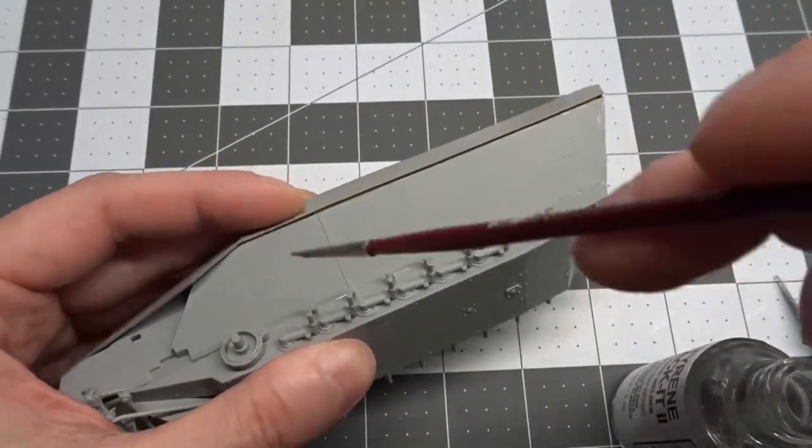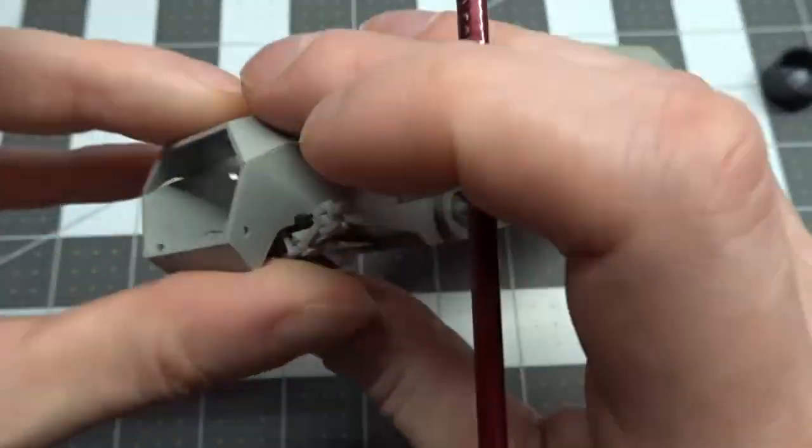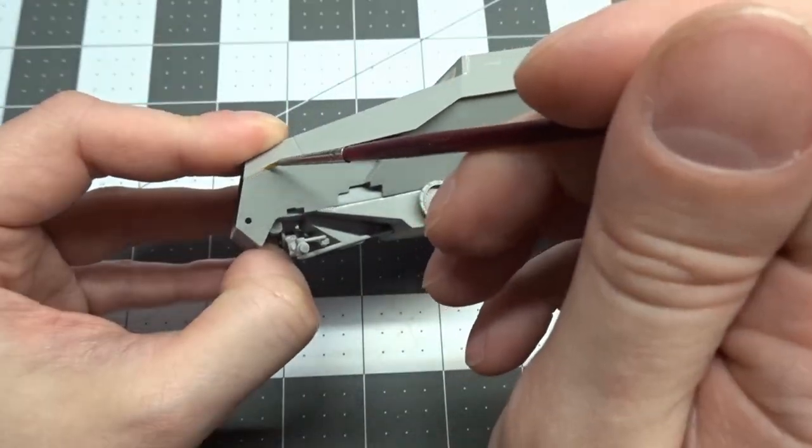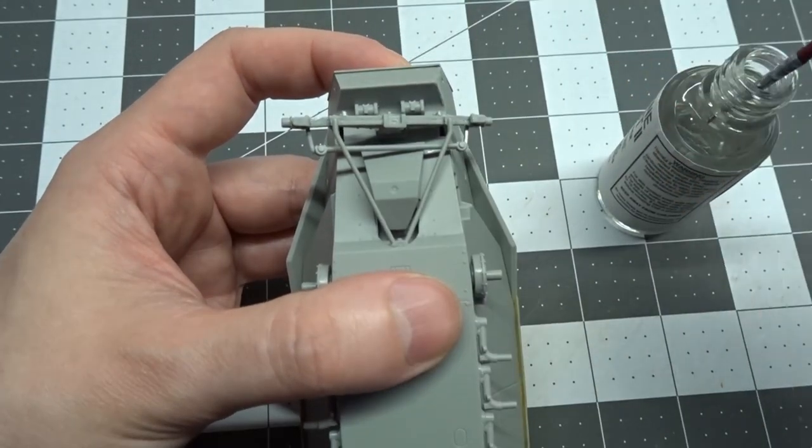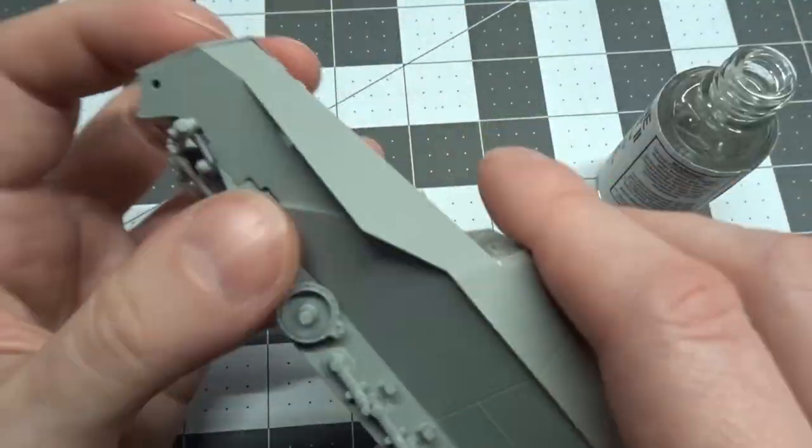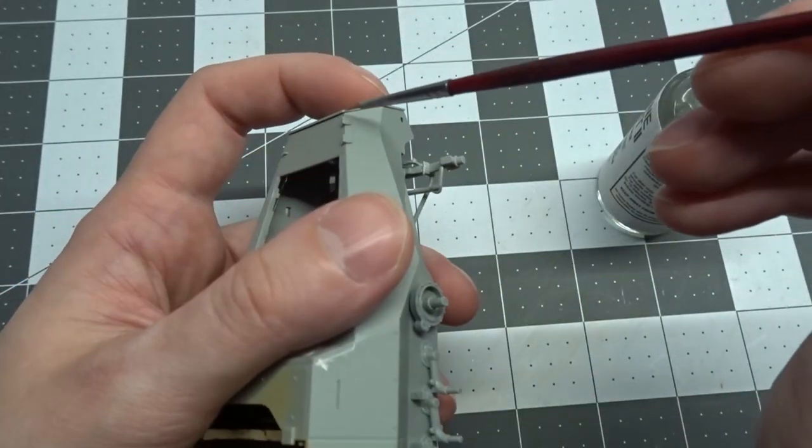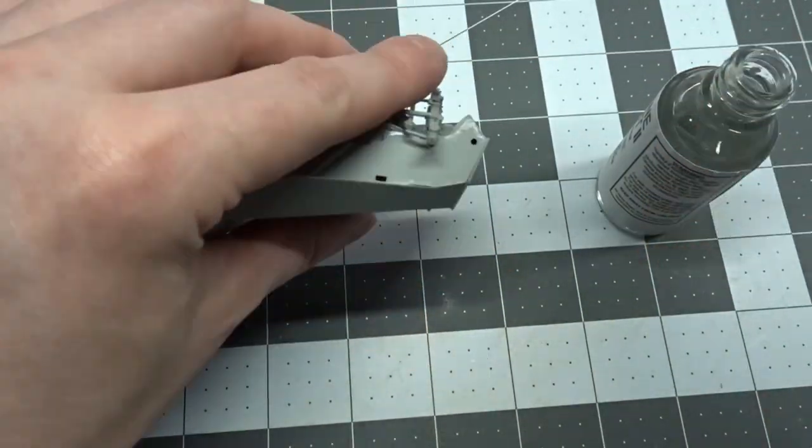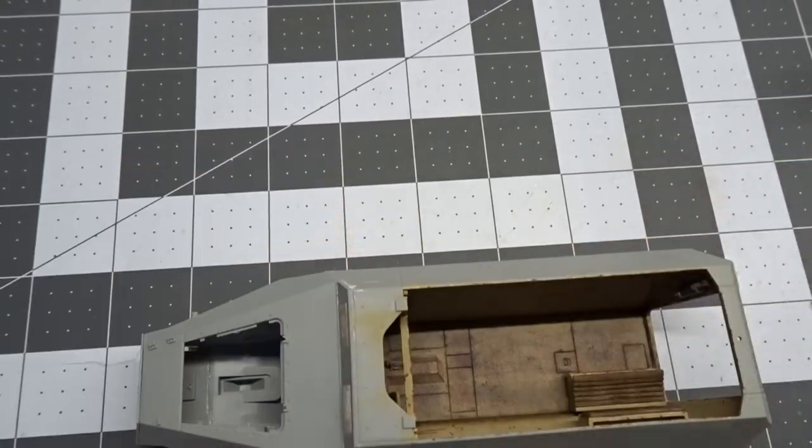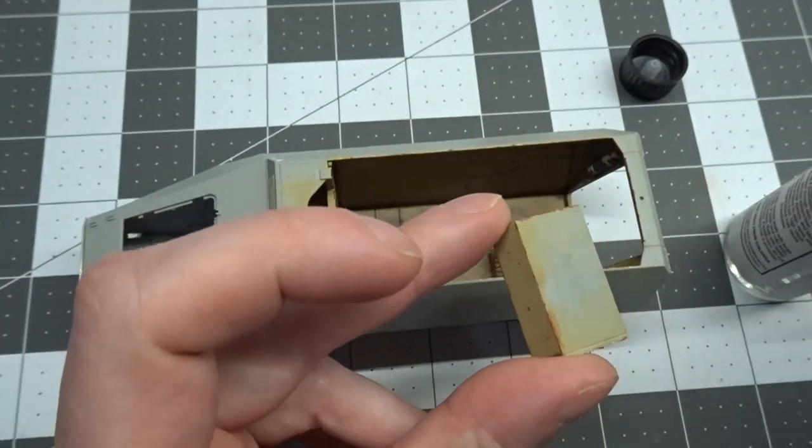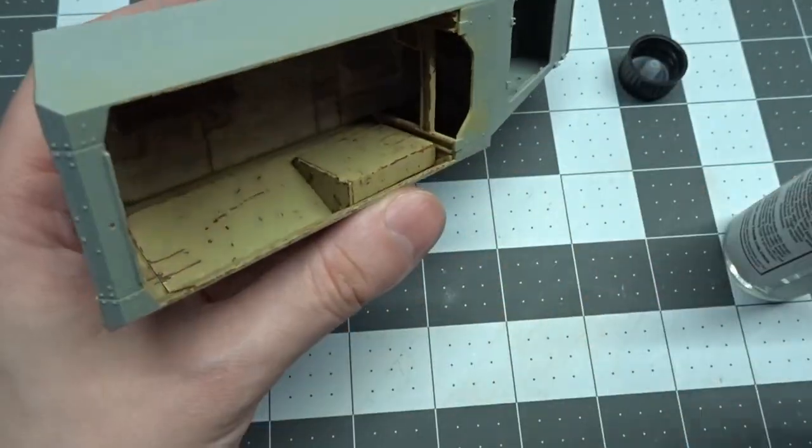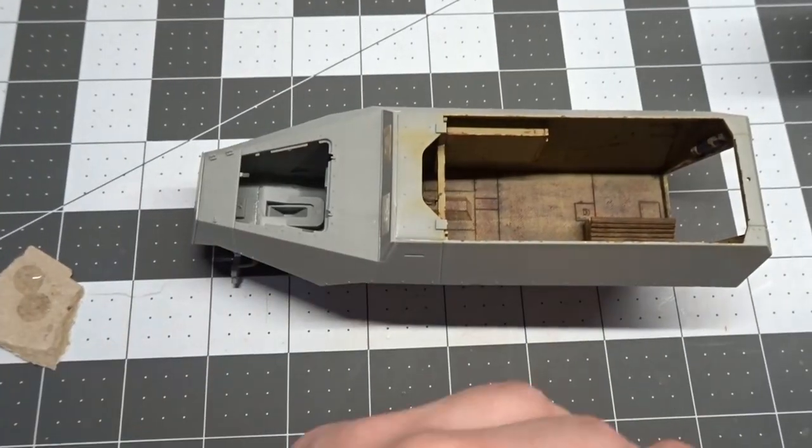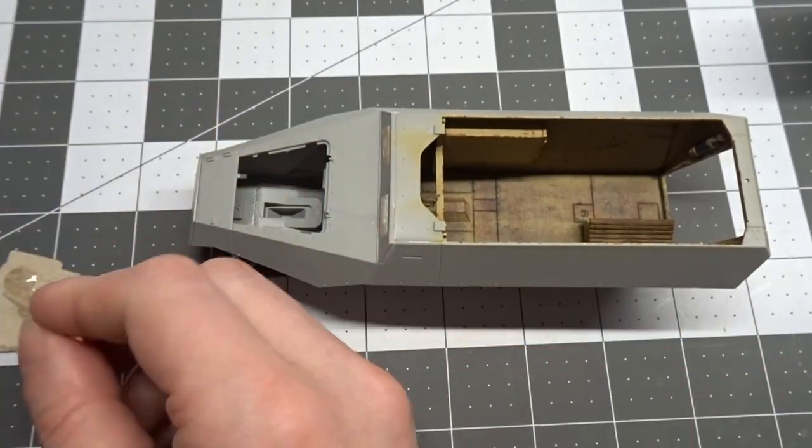Now the upper and lower hull can finally be glued together. I decided to add the front plate while I was doing this as well. I rough up the surface and then glue the upper ammo box into position. Then finally, the Pak40 gun mount is secured into place.